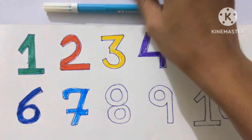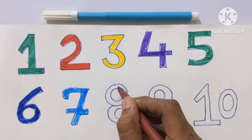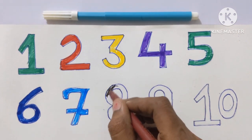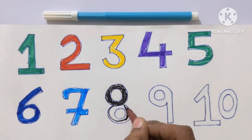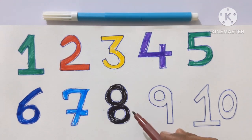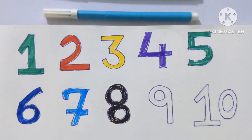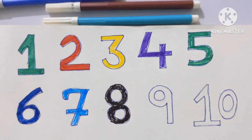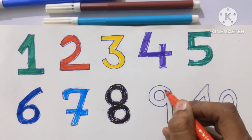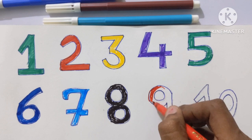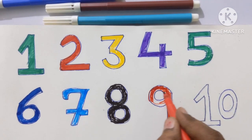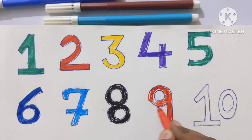Next is number 8. Let's color it in brown color. It is in brown color. Next is number 9. Let's color with a red color. Number 9 is in red color.